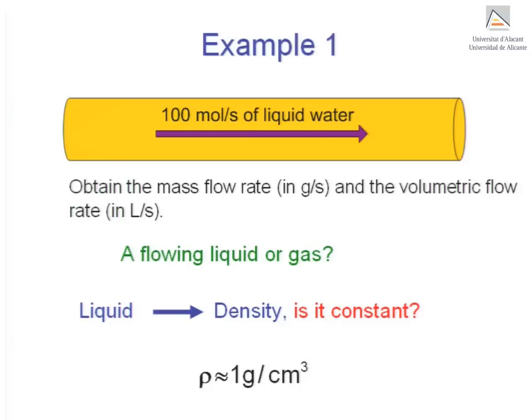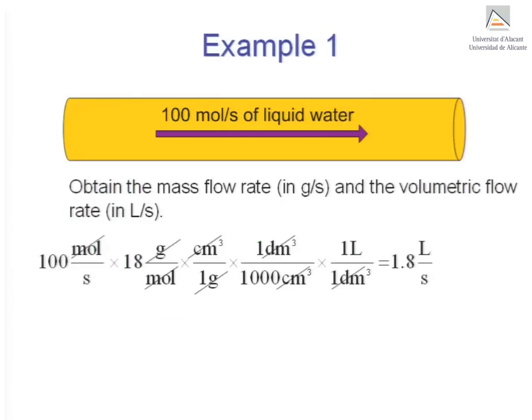In this particular case, we will use as an average value for the density of liquid water, 1 gram per cubic centimeter. Performing the calculation as before, by showing the units of all numerical quantities and also using appropriate conversion factors, we find that 100 moles a second corresponds to 1.8 liters a second of liquid water.